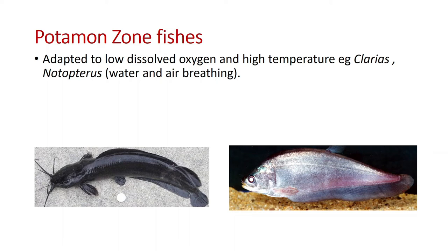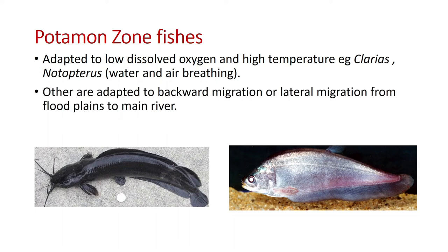For example, Clarias and Notopterus are both water and air breathing — they can breathe from air because of their special respiratory organs. A second adaptation is backward migration or lateral migration from the flood plain to the main river or from the main river towards the upper part. These fishes also have more complex breeding habits with multiple spawning, a great degree of parental care, and they lay a vast number of eggs either in the flood plain or in the headwater streams, and undergo migration for this purpose.